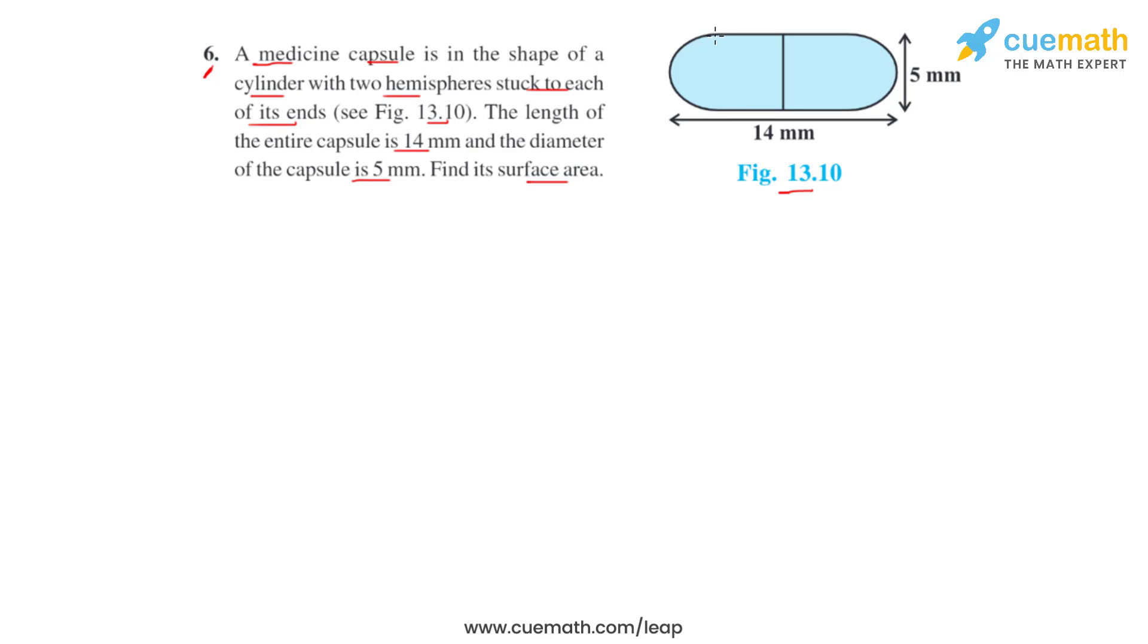The first thing that we can do is we can highlight the two hemispheres by drawing two line segments like this. So that clearly shows us that there are two hemispheres stuck at both the ends of cylinder.